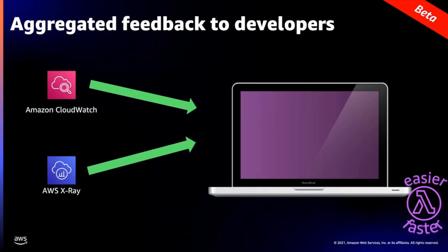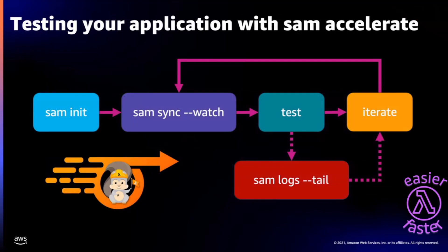The last thing about SAM Accelerate is aggregated feedback. Before this launch, you only got Lambda function logs when you ran SAM logs. Now, in addition to CloudWatch logs for your Lambda functions, you get logs from API Gateway and traces from X-Ray. With SAM Accelerate, creating and testing an application is easier and faster — we created new functionality to get away from emulating the cloud locally and instead give you the tools to actually test your features in the cloud.